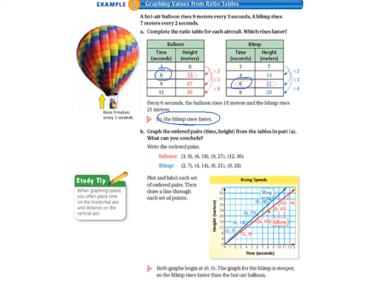Both graphs begin at 0 and the graph for the blimp is steeper so the blimp rises faster than the hot air balloon.